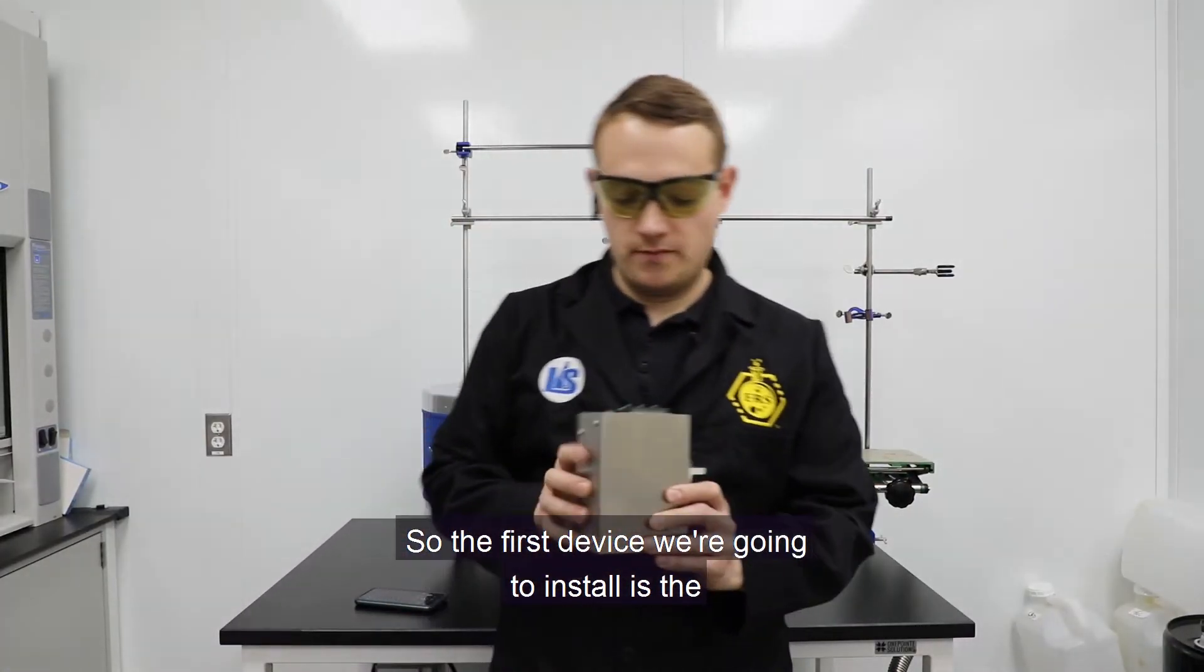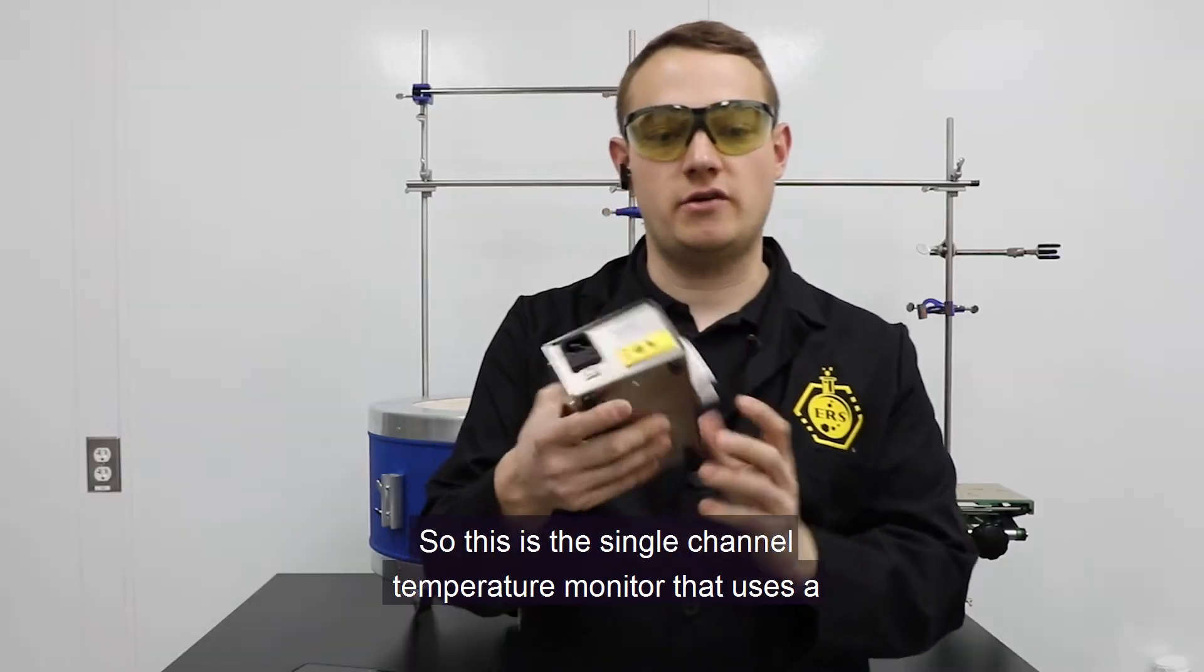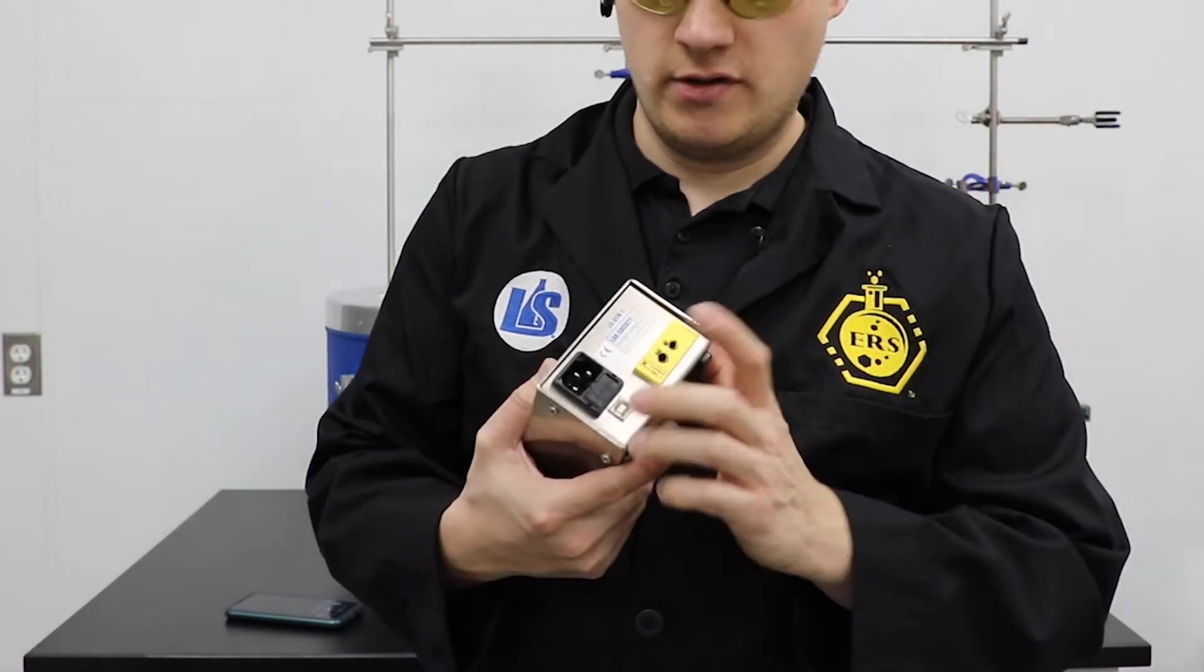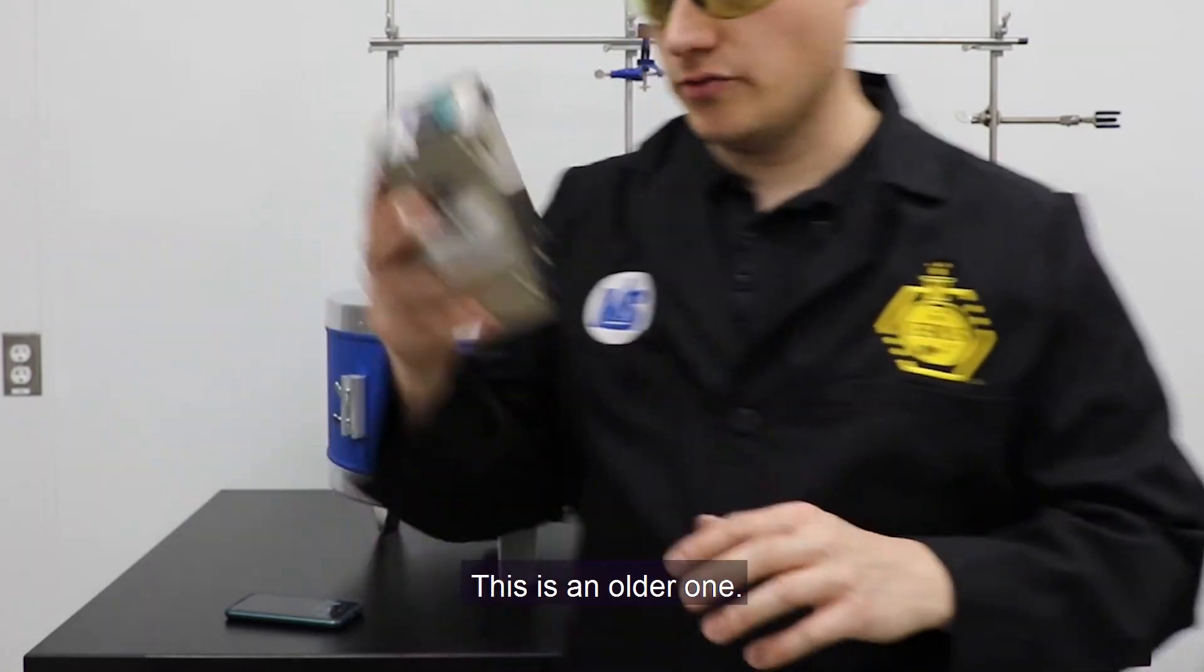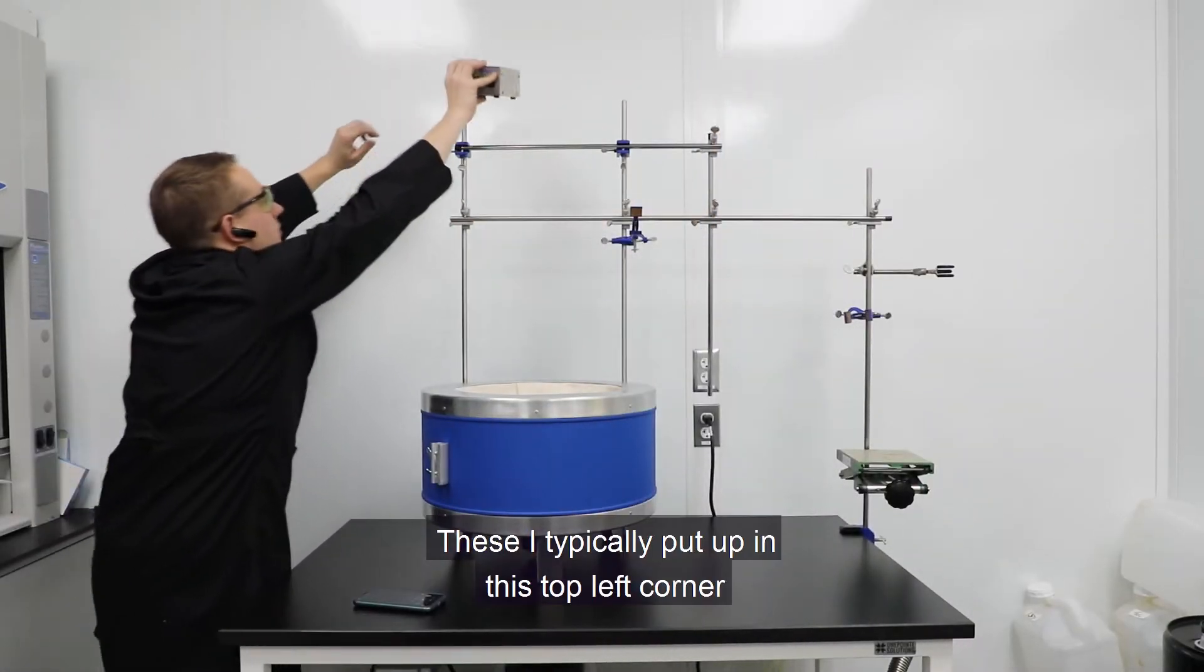So the first device we're going to install is the DTM-1 temperature monitor. This is a single channel temperature monitor that uses a K-type input, has USB output, and our newer models have an external power supply for UL compliance. This is an older one. These I typically put up in this top left corner.